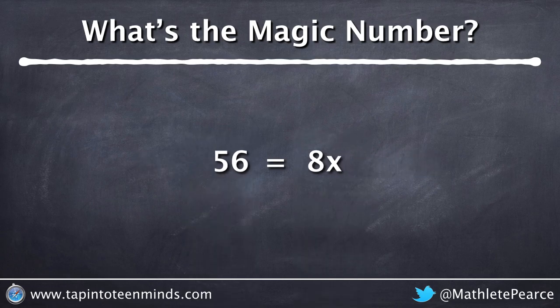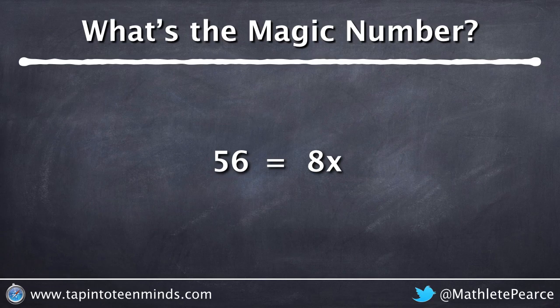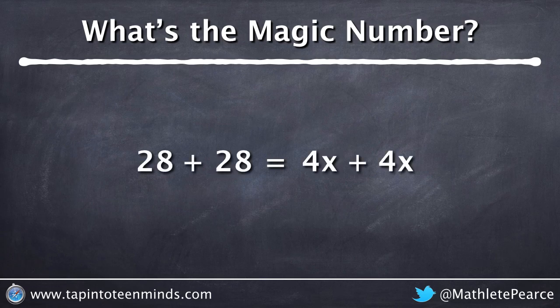We can then remove 17 on both sides and we're left with 56 is equal to 8x. That would be the same thing as chopping our 8x's into 2 and our 56 into 2. And we would say that 4x's plus 4x's equals 28 plus 28.